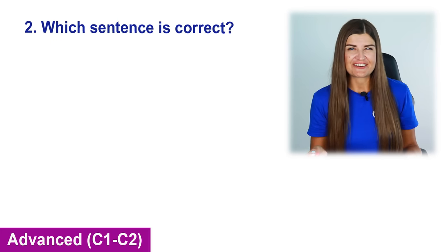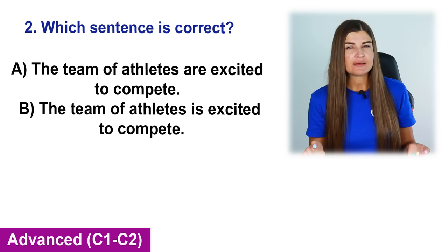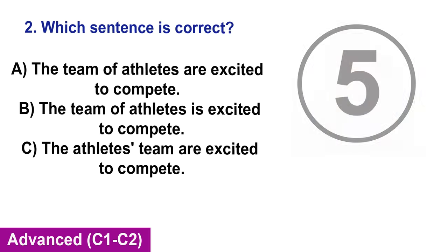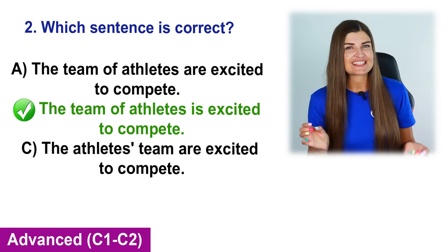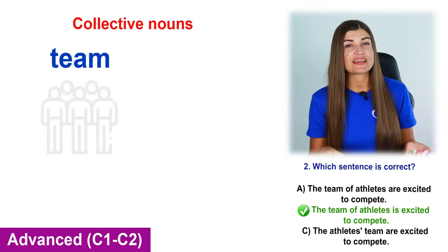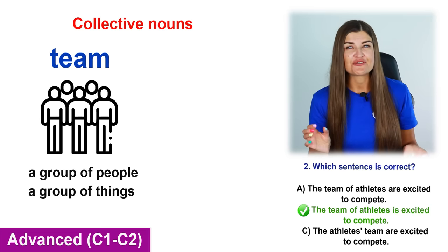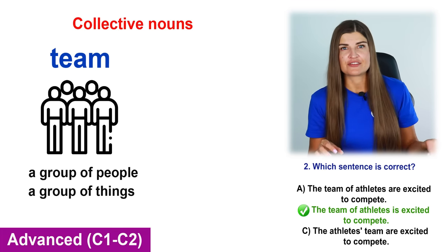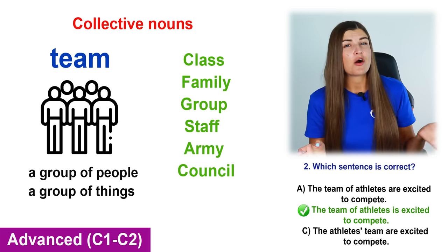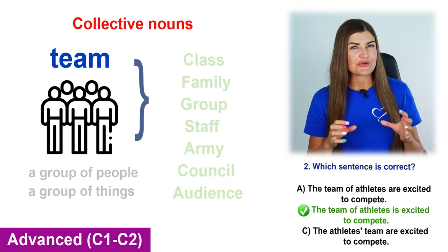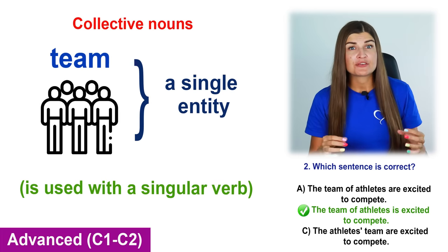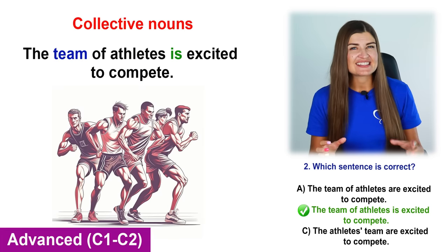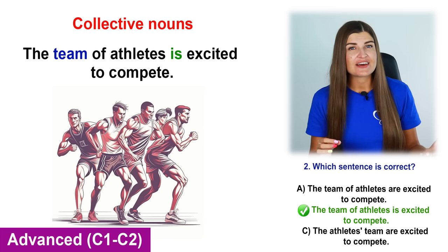Question 2: Which sentence is correct? A. The team of athletes are excited to compete. B. The team of athletes is excited to compete. The correct answer is B: The team of athletes is excited to compete. Team is a collective noun. Collective nouns are words that refer to a group of things or people — such as a team of players, class, family, group, staff, army, council, audience. The team should be treated as a single entity, always referred to with a singular verb even though it may refer to multiple individuals. The verb is is used correctly to describe the excitement of the entire team.